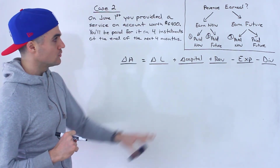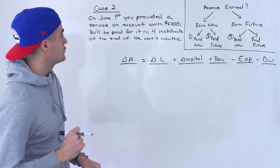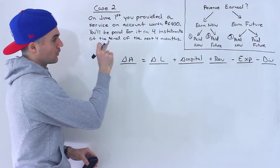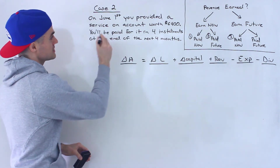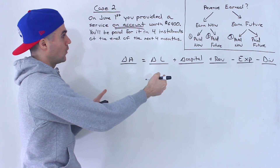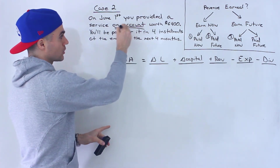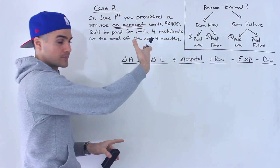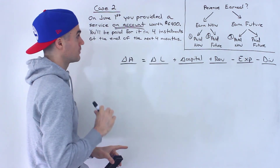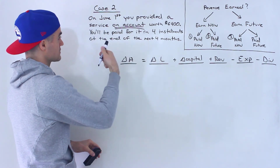Moving on to case two, where you're earning the revenue now but you're going to be paid for it in the future. Let's say on June 1st you provided a service on account worth $6,400. Whenever you see something 'on account,' whether you provide a service or deliver a good on account, it means you're going to be paid for it later in a future period. So you provided a service on account worth $6,400.